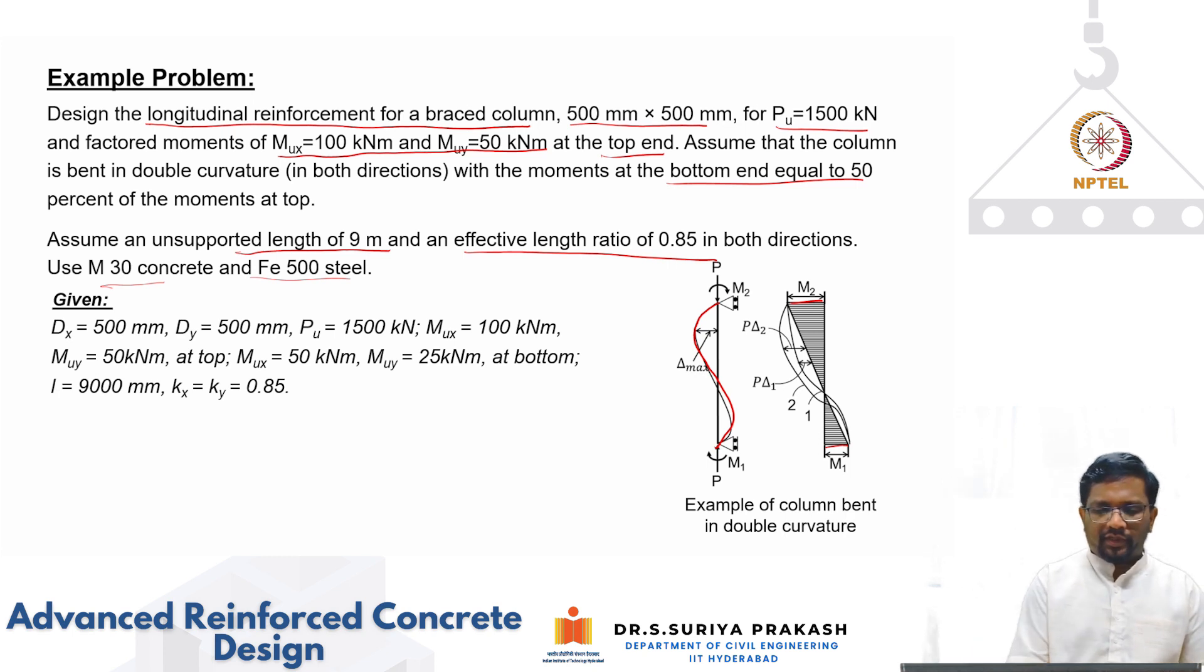These are the things that we get: dx and dy are 500, these are basically square columns. Column generally we try to keep a square column but you can have rectangular column also depending upon what is the moment of inertia and rigidity that you are trying to achieve. So Pu is 1500, Mu_x is 100, Mu_y is 50 at top, similarly it is 50 and 25 at bottom.